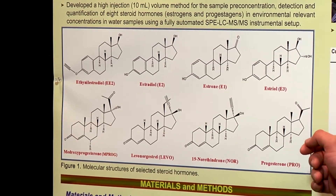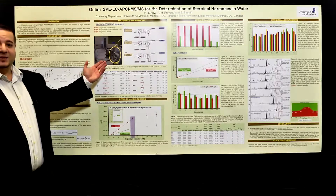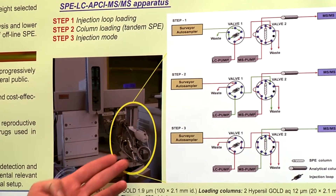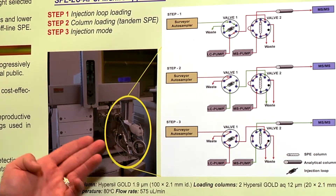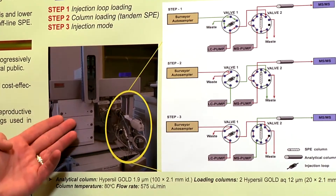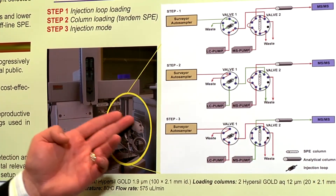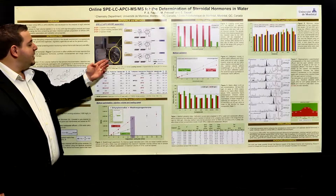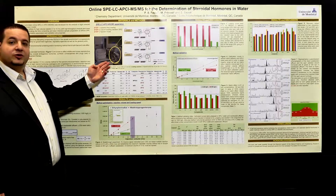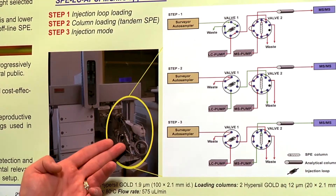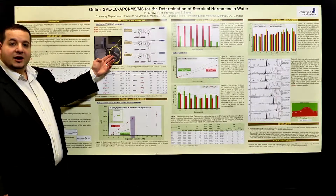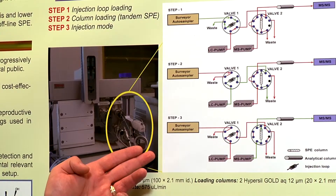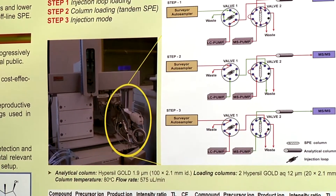We'll be analyzing these by the online SPE method. We have a 10 ml injection loop and online SPE cartridges. The idea is to pick up a volume directly from our sampler, fill the 10 ml loop, and by back-flushing with the LC pump, bring our wastewater into the SPE cartridge where we concentrate our analytes. Once that's done, the MS pump does a back-flush, pumps our analytes out of the SPE cartridges, through the analytical column for separation, and then to the detector — the triple-quad.